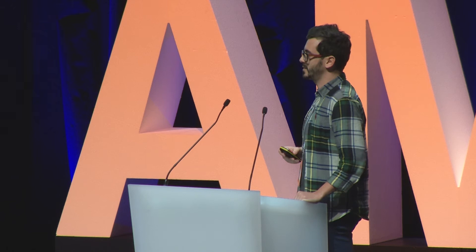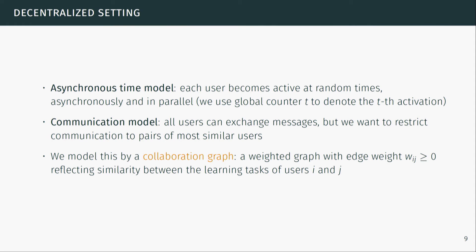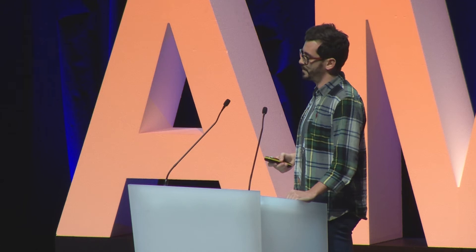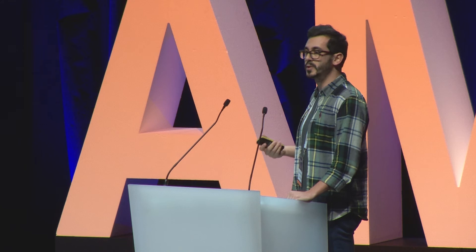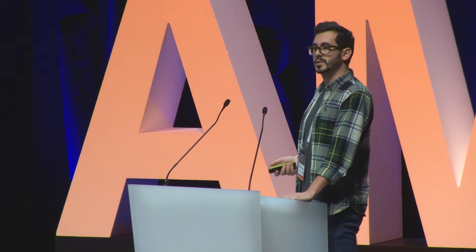We use a decentralized network architecture in the asynchronous time model: each device becomes active at random times asynchronously and in parallel, with no global synchronization. I use a global counter t for analysis to denote the t-th activation. In principle all users can exchange messages, but we restrict communication to pairs of more similar users to avoid wasting bandwidth. We model this by learning a collaboration graph — a weighted graph where edge weight W_ij reflects the similarity between the learning tasks of user i and j.